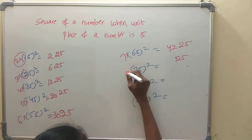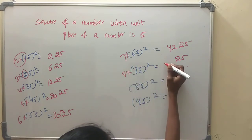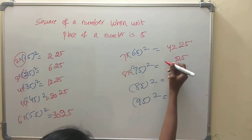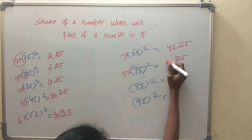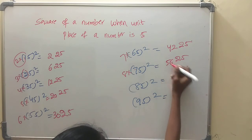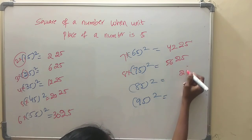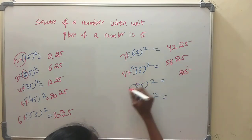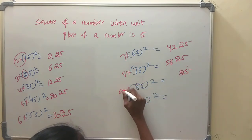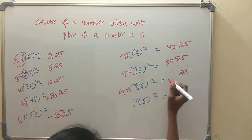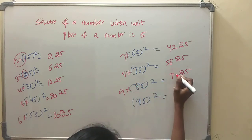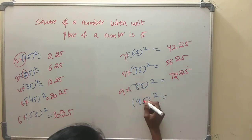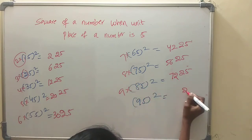For 75 squared: tens digit is 7, next number is 8, 7 into 8 is 56, append 25. Result: 5625. For 85 squared: tens digit is 8, next number is 9, 8 into 9 is 72, append 25. Result: 7225.